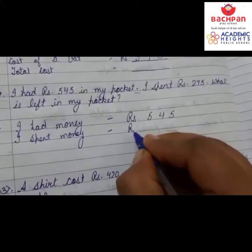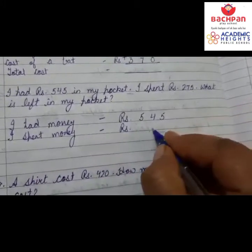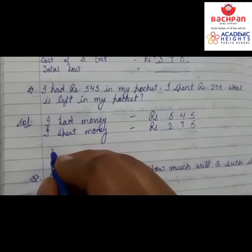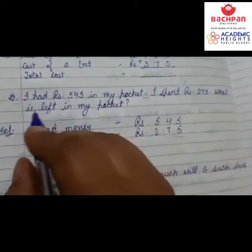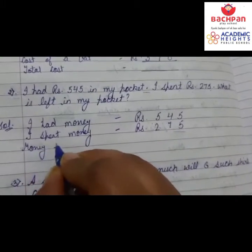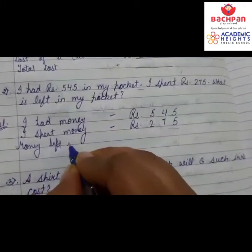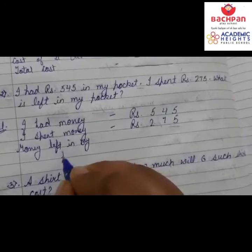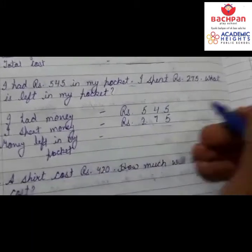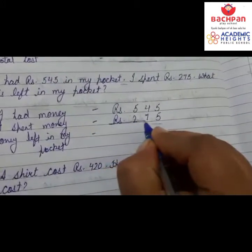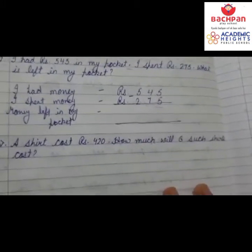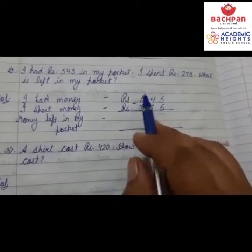Next line: I spent money — how much did I spend? Rupees 275. Next line: Money left in my pocket. Write it here. Make a sleeping line — the subtraction sign — then solve the question. You can do it yourself.